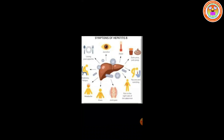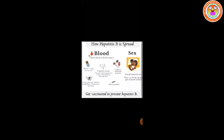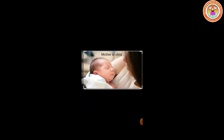Now let us see the transmission of hepatitis B — how it spreads. It is transmitted through various ways: mother to child, sexual contact, and sharing of needles. Mother to child: it is transferred from an infected mother to their babies. Pregnant women infected with HBV can pass the virus to their babies during childbirth. However, the newborn baby can be vaccinated to avoid getting infected in almost all cases.